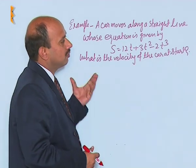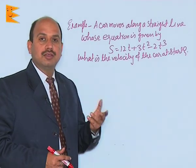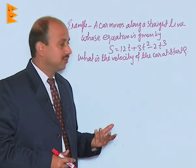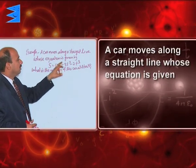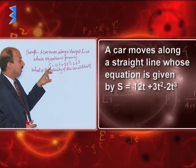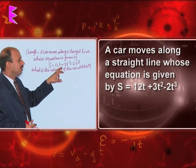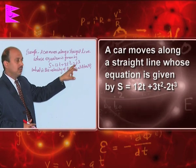See another example. This example is actually related to instantaneous velocity, how to calculate instantaneous velocity. A car moves along a straight line whose equation is given by s is equal to 12t plus 3t square minus 2t cube.